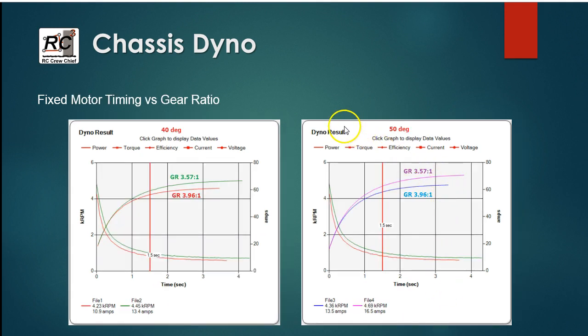So the next graph, what we looked at was fixing the motor timing and then varying the gear ratio. So here we've got 40 degree timing and we've got the low gear ratio, the 3.57, versus the high gear ratio 3.96. So I can see here again at one and a half seconds—why I'm picking one and a half seconds, because that's kind of a typical acceleration run you're going to see on those tracks with the inertia that I have in the system right now. So at one and a half seconds here you can see, you know, we've got an extra two or three kilometers an hour.